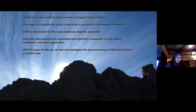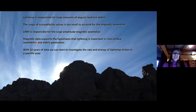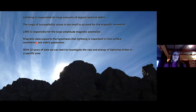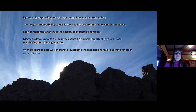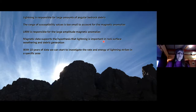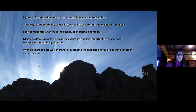To summarize: we think lightning is responsible for large amounts of the angular bedrock debris we see up in the range. The range of susceptibilities is far too small to account for the magnetic anomalies that we see, so we attribute that to lightning-induced remnant magnetization to account for the large amplitude magnetic anomalies. The magnetic data supports the hypothesis that lightning is important in rock surface weathering and debris generation, and with 10 years of data we're starting to investigate the rate and energy of lightning strikes in this specific area.